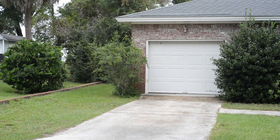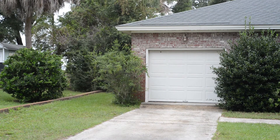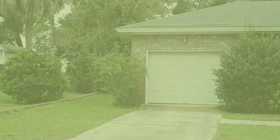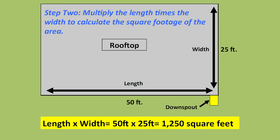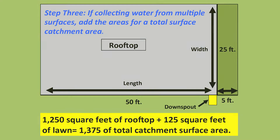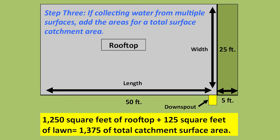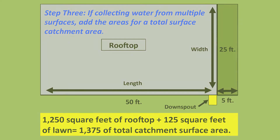To estimate the area of your catchment surface, follow these simple steps. Step one: measure the length and the width of the surface in feet. Step two: multiply the length times the width of the area to calculate square footage. Step three: if collecting from multiple surfaces, add the sum of the areas for a total surface catchment area. This calculation will be in square feet.